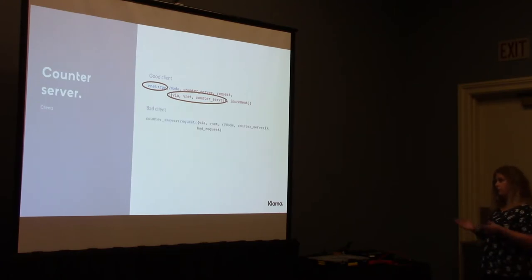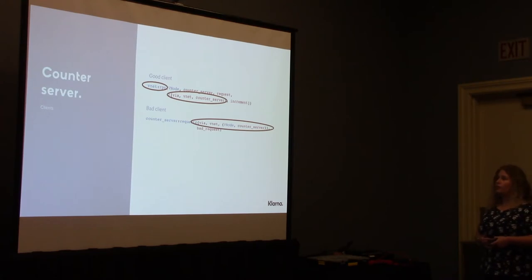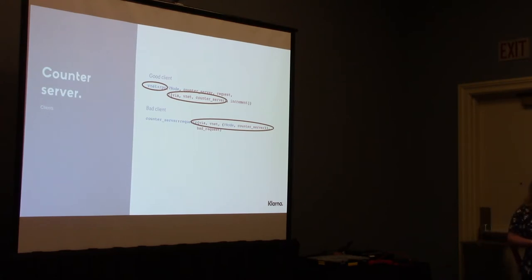In the case of the bad client, we just need to change the process discovery to use VNet. Now we've changed everything in the code — that wasn't a big deal. So now we can start writing tests.